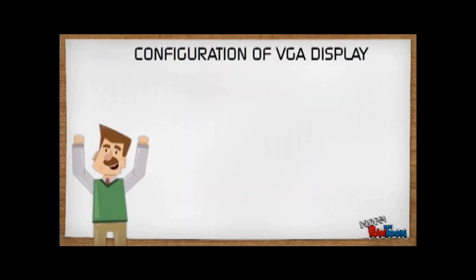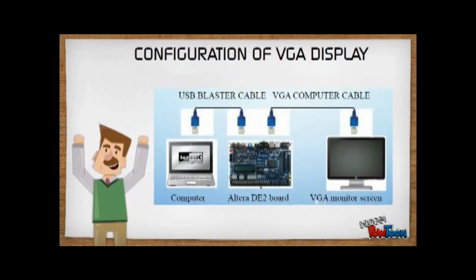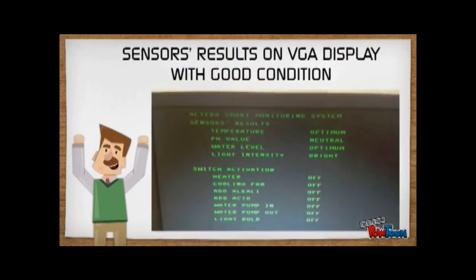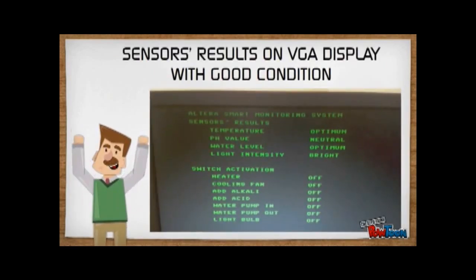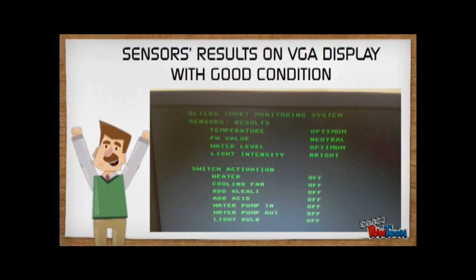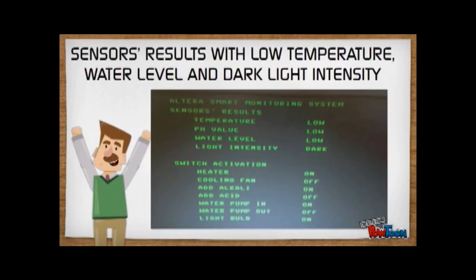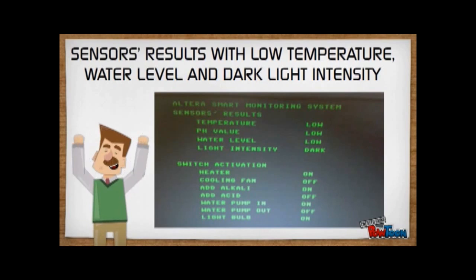The next one is the configuration of the VGA display. This picture shows the sensor result on VGA display with good condition. However, this page shows the sensor result with low temperature, water level, and dark light intensity.